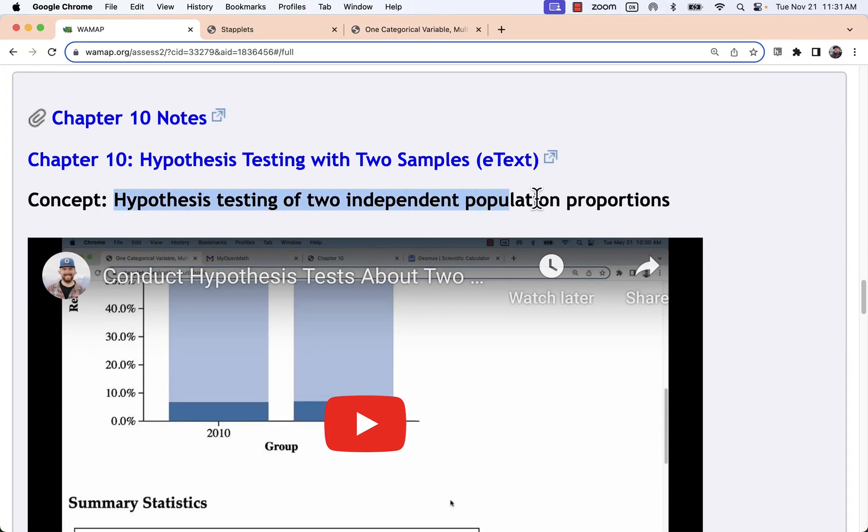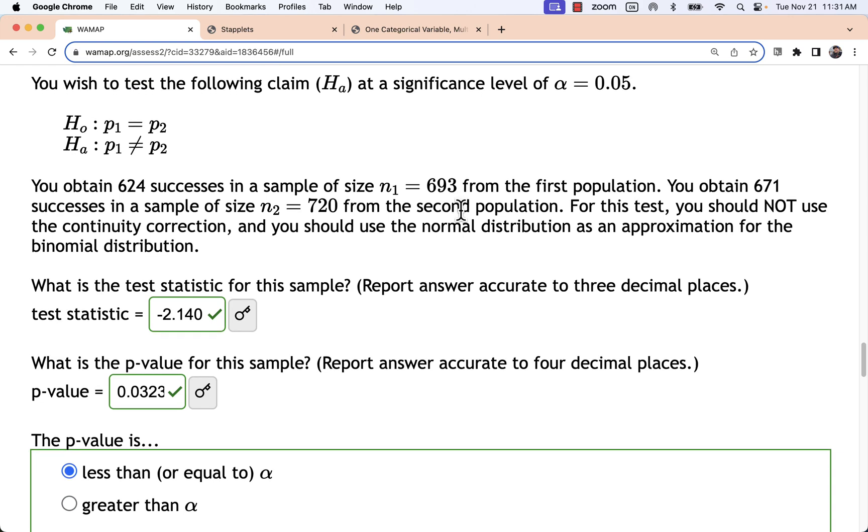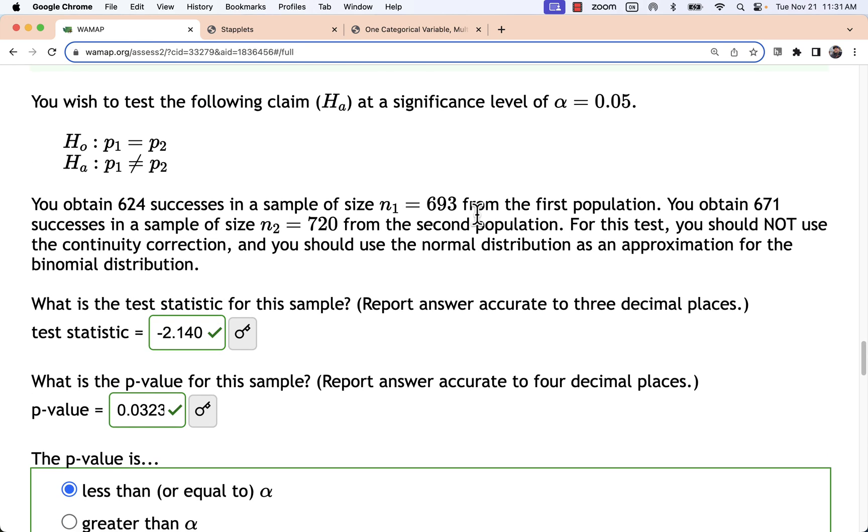Here we're looking at a hypothesis test of two independent population proportions. Basically we're going to have a situation where we ask a question like a yes or no question, or we look at a categorical observation or response, and in this one we break it all the way down to just number of successes.